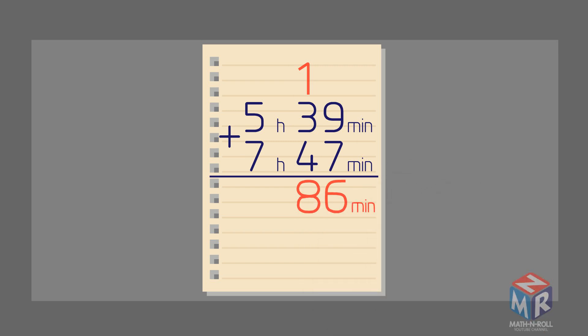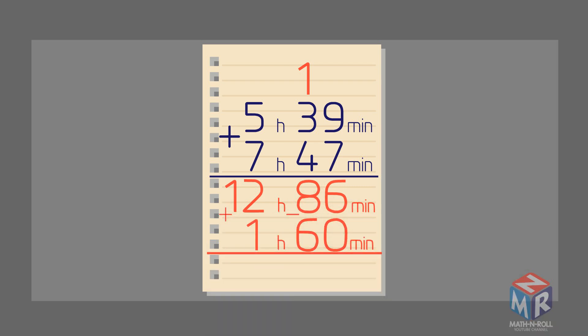Now we need to add the hours column. 5 plus 7 equals 12 hours, so we have 12 hours and 86 minutes. 86 exceeds 60 minutes, so we need to regroup these 86 minutes into 1 hour and 26 minutes. We take away 60 minutes from 86 minutes and give it to the hours. Now we have 13 hours and 26 minutes.